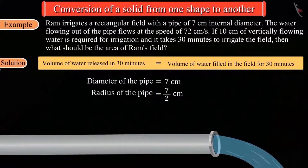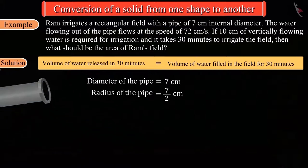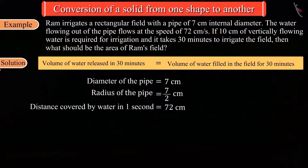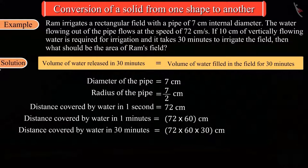The question states that the flow of water is 72 centimeters per second, that is water covers a distance of 72 centimeters in a second. So the distance covered by water in 30 minutes will be 72 multiplied by 60 multiplied by 30 centimeters.